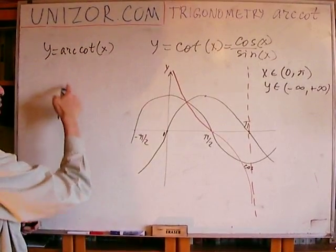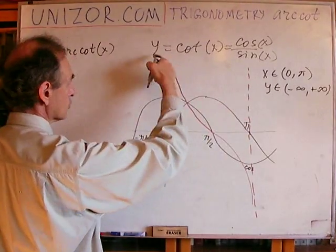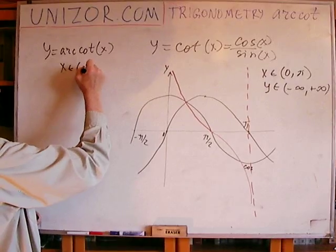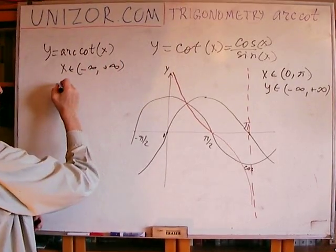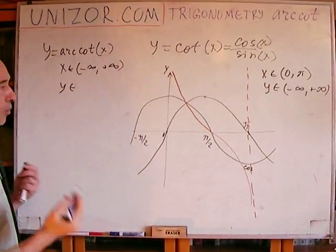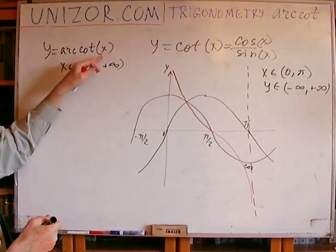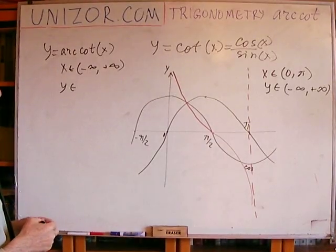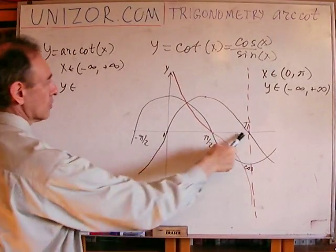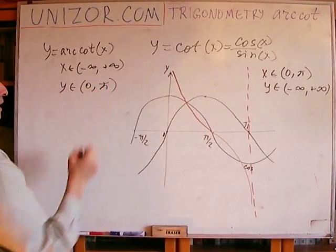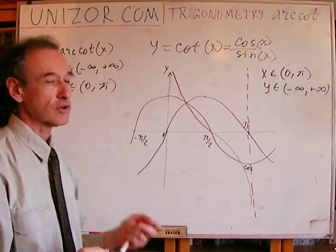Now, its domain would be the same as the range of this function, which is y, which is from minus infinity to plus infinity. Now, its range, what's the values the angle can take if the values of cotangent such and such? Well, from 0 to pi, we can already define this. Now, the question is how the function looks like.